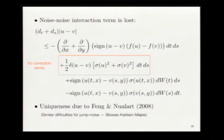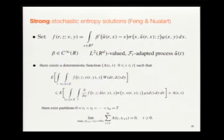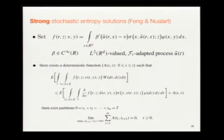Feng and Nualart realized you need to add an additional piece of information to these inequalities to handle the non-adapted integrals. This additional condition is hard to explain directly. I will come back to it later in the context of Malliavin calculus, where it becomes more natural. The point is: you need to take the entropy inequalities and add more information to deal with these non-adapted integrals.